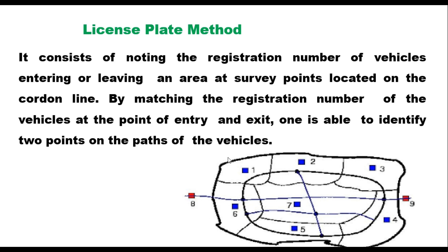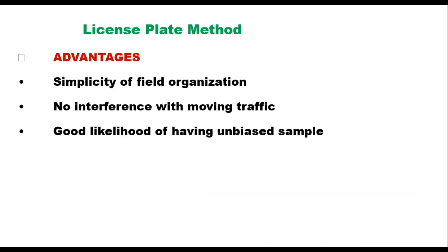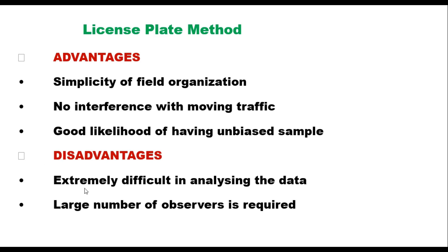The license plate method divides the area with a cordon line. At each point of entry and exit, a group of observers is stationed to note down the registration plate numbers of vehicles entering and exiting. By matching registration numbers at entry and exit points, one can identify two points on the path of the vehicle. Advantages: simple field organization and no interference with moving traffic, with a good likelihood of an unbiased sample. Disadvantages: extremely difficult data analysis and a large number of observers is required at each entry and exit point.